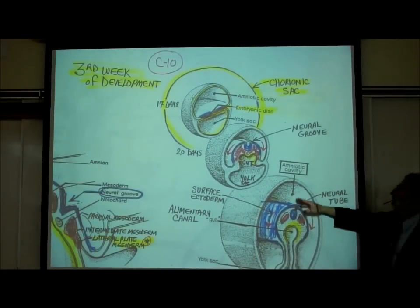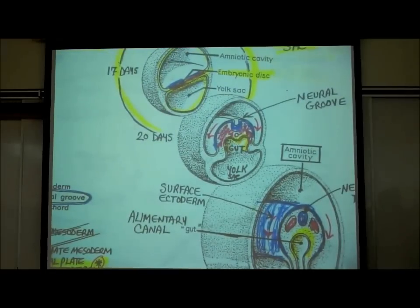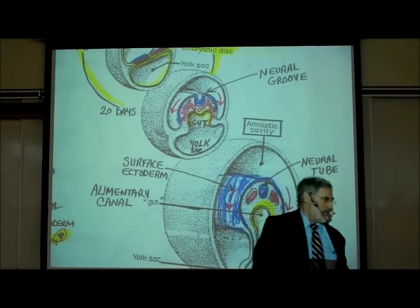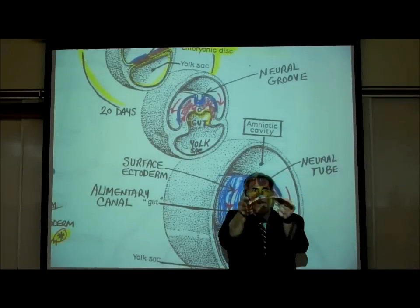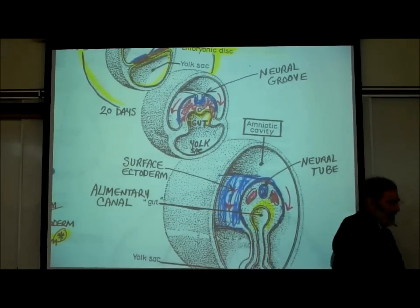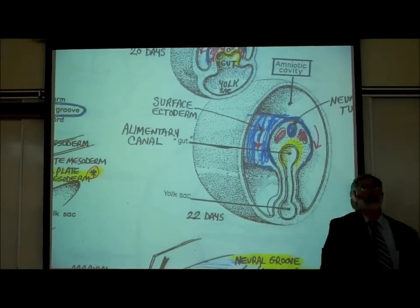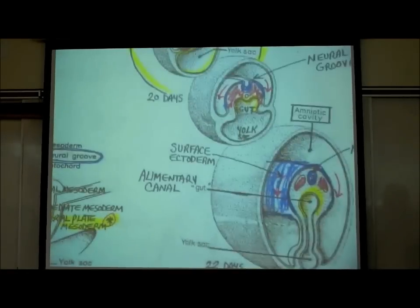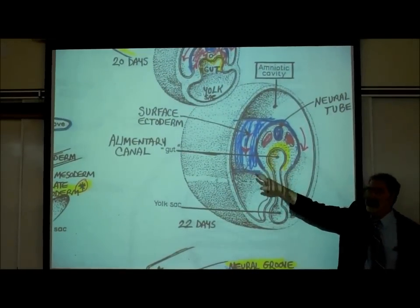The pictures that show this are on C10. Here we can see the ectoderm in blue, and we can see this whole embryo folding into a tube shape. This is the surface ectoderm which will become the outer skin or epidermis. Here we can see the neural tube that developed from ectoderm — that'll become the whole brain and spinal cord, the central nervous system. The endoderm becomes the alimentary canal or gut.